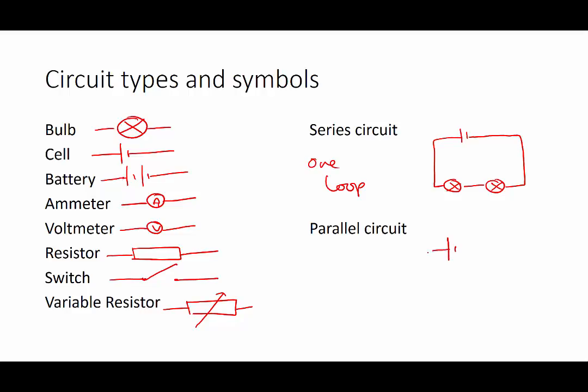A parallel circuit is made up of more than one loop, so we draw our first loop in, and then any more components we add as separate loops. So more than one loop makes it a parallel circuit.